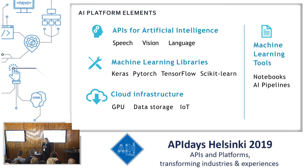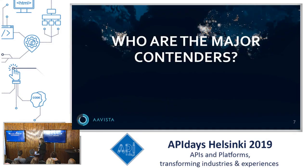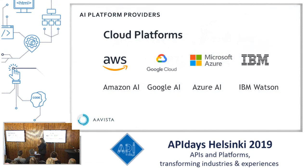You also need cloud infrastructure, because you don't want to run very heavy model building on your own premises, as it requires lots of CPU, power, memory, and parallel tasks. So who are the major contenders? There are four major cloud platforms who all provide AI APIs. Amazon is the biggest in the cloud area, but each of the other companies — including Google, Azure, IBM and Watson — have their own advantages and maybe also some disadvantages.